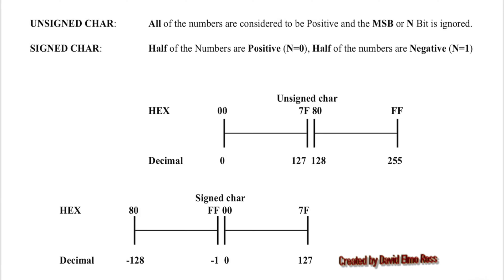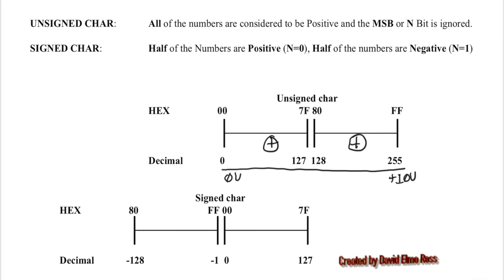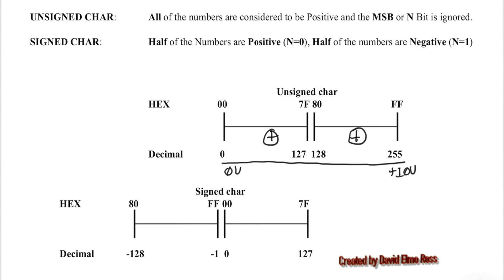Unsigned means that all of our numbers from 0 to FF are all positive. There are times when we need this — for instance, if we are digitizing voltages from 0 volts to plus 10 volts, which are all positive voltages. We want to use the number system where numbers are all positive, from 00 to 7F and 80 to FF.